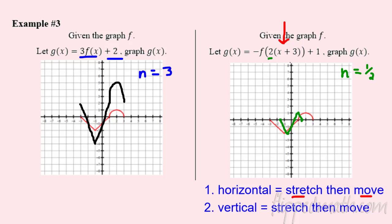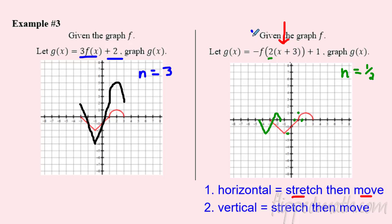Now that I have my horizontally compressed shape, I need to shift it left three. So I grab the shape and move it left one, two, three. Next, I have a vertical reflection — the negative is in front, so it's vertical. Points on the x-axis stay there; the point at negative two comes up to positive two; the point above one comes down below one. I draw the result: straight lines into the curved sections, then the little dome flipped up.